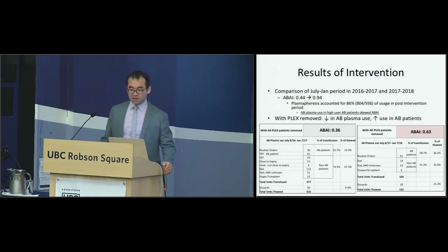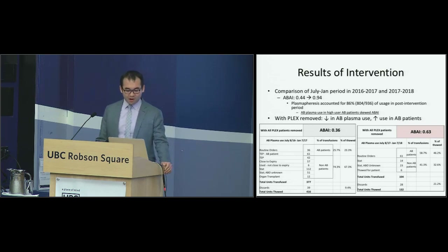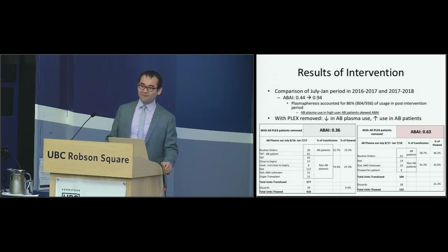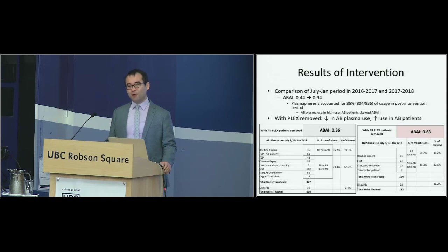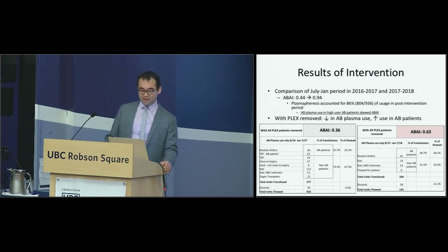Here are the results of the intervention. We took a six-month period comparing pre and post: pre-period was 2016 to 2017, post-period was 2017 to 2018, using the same six-month period to reduce seasonality as a confounder. We found that our ABAI went from 0.44 to 0.94. However, stepping back and looking more carefully, we found that plasmapheresis accounted for 86% of our usage in the post-intervention period. So AB Plasma use in high-use AB patients can skew the ABAI significantly.